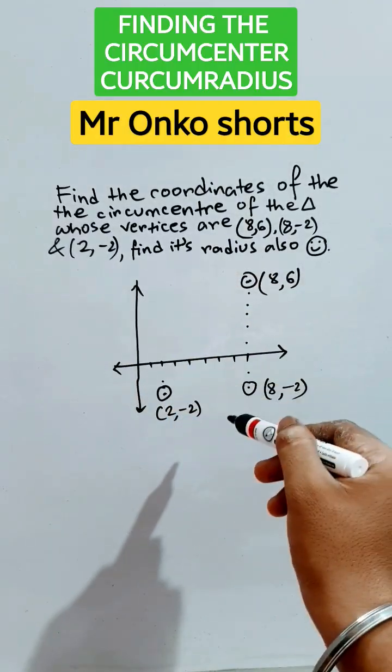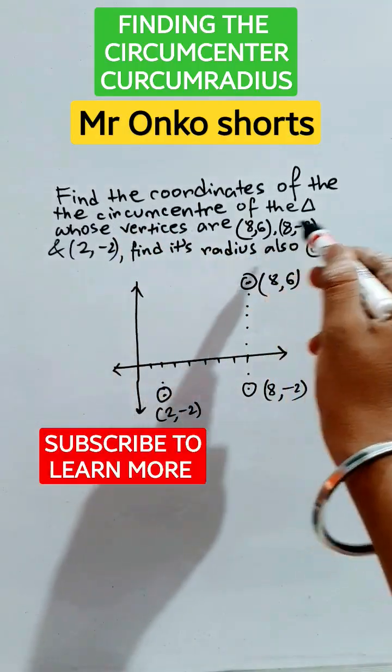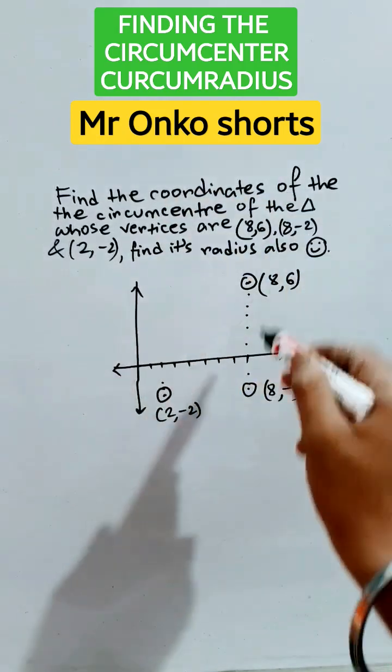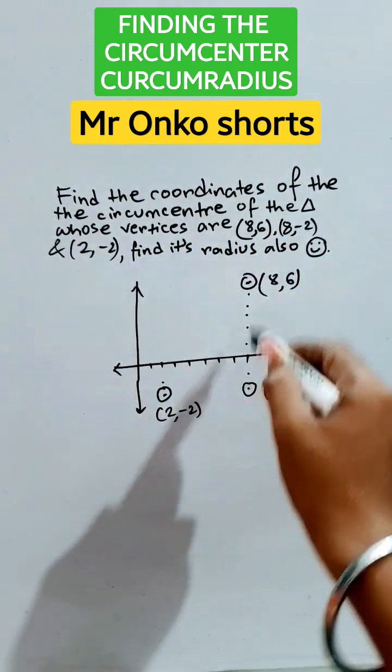Hello guys, welcome to Mr. Onko shorts. We are given a question where a triangle's vertices are given and you have to find the circumcenter and circumradius of it. So we have located the three points given.